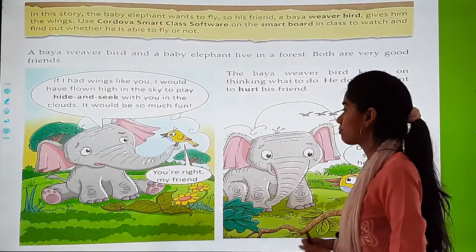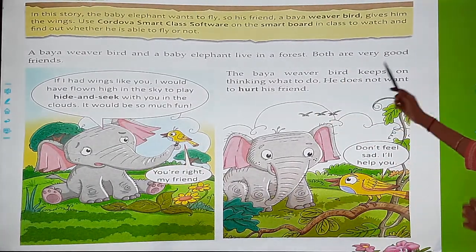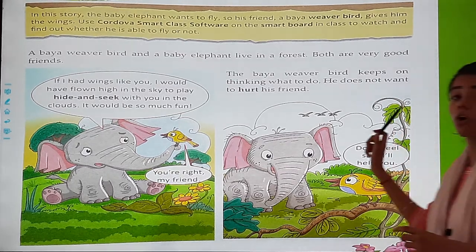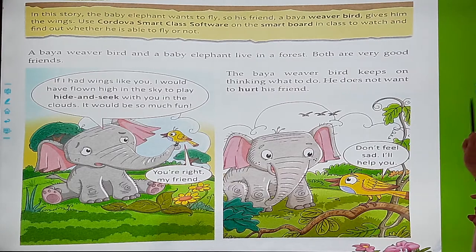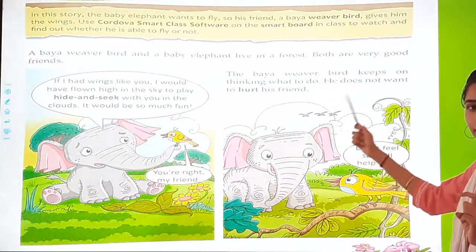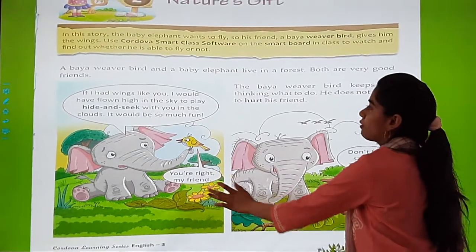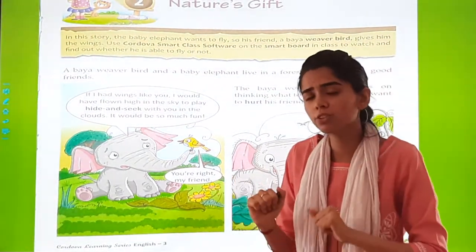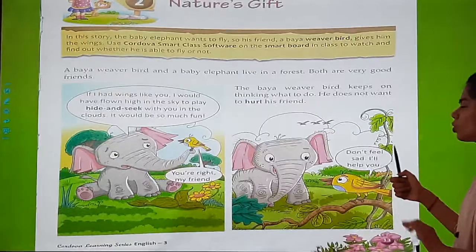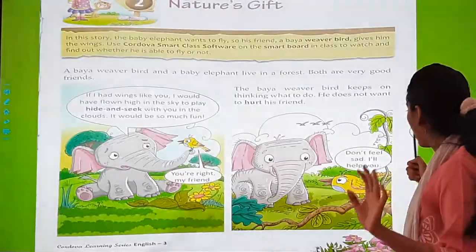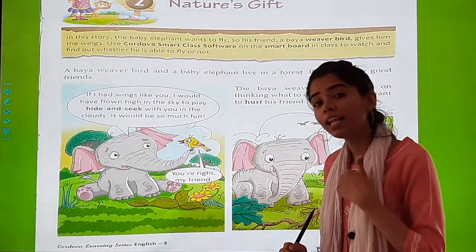Bird said, 'You're right, my friend.' Then the bio-weaver bird keeps on thinking what to do — she does not want to hurt her friend. She keeps thinking: how should I help? Then she says, 'Don't feel sad. I'll help you.'